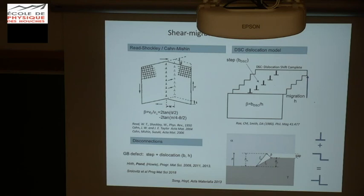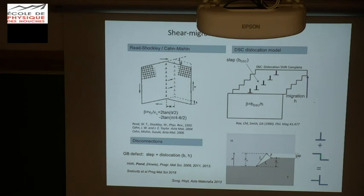Rey and Smith also consider defects called disconnections — something that only pertains to grain boundaries. A disconnection is a dislocation plus a step. I will spend some time explaining what a disconnection is and the basics of grain boundary structure.